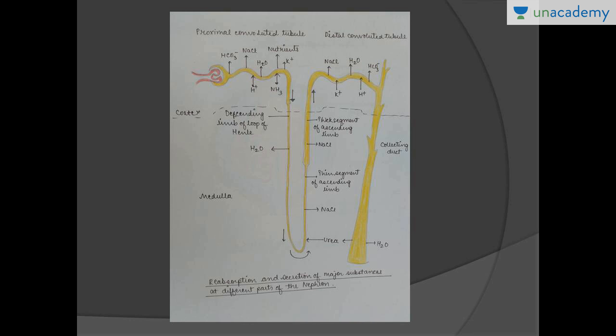Finally, the collecting duct mainly absorbs urea in the medullary region to maintain higher osmolarity, and some water is absorbed. pH and ionic balance are also maintained here. That's about it — thank you.